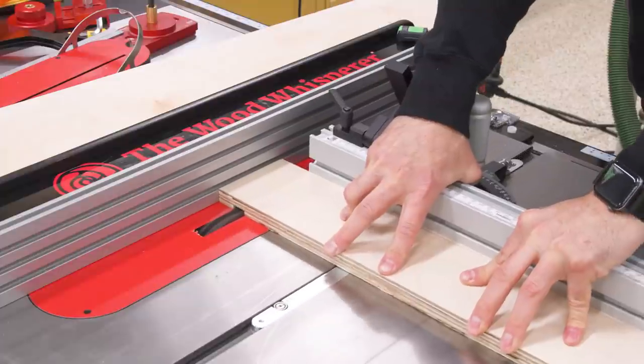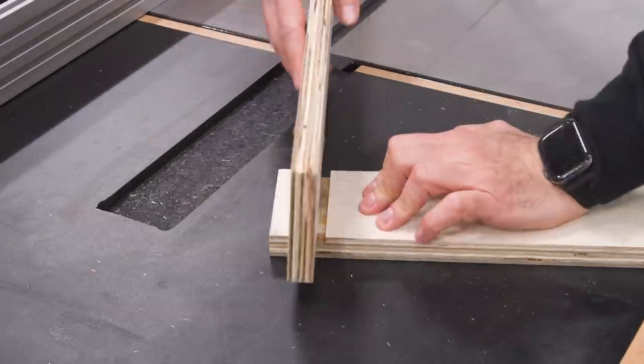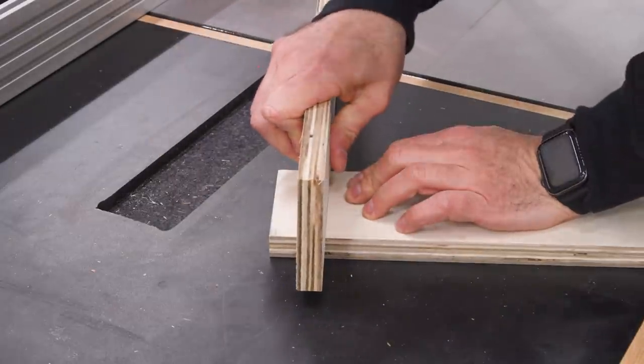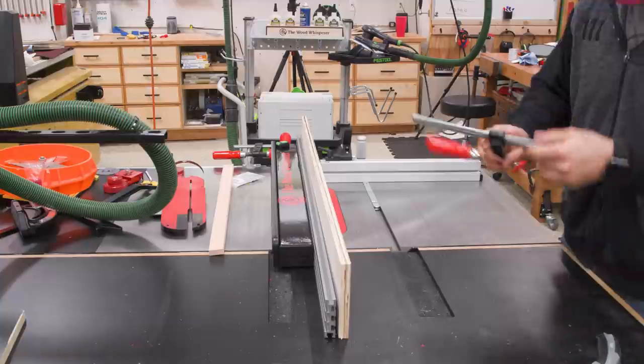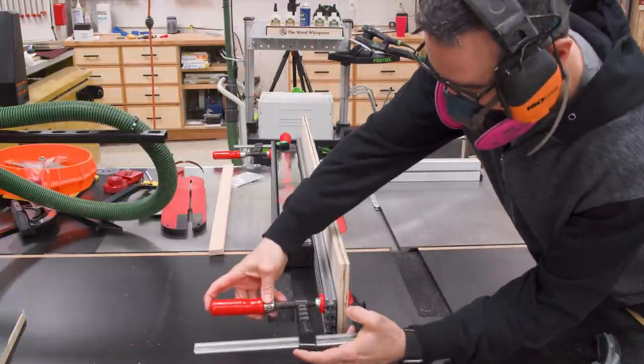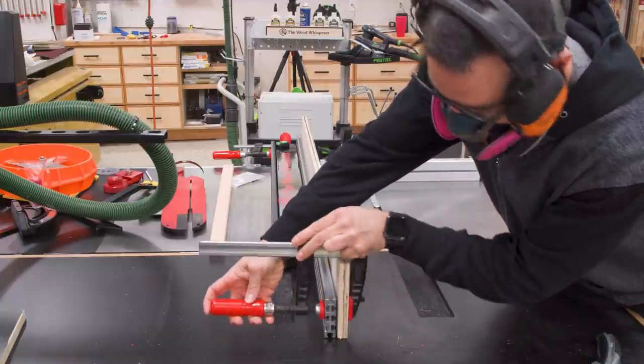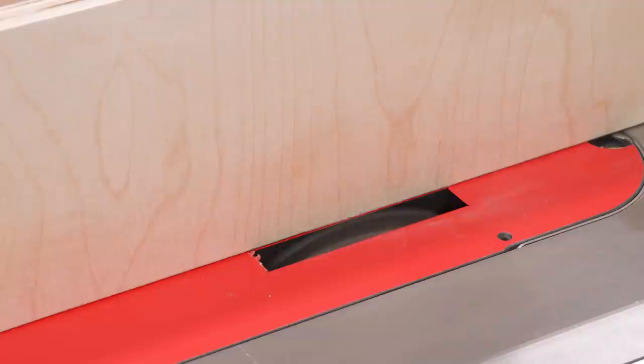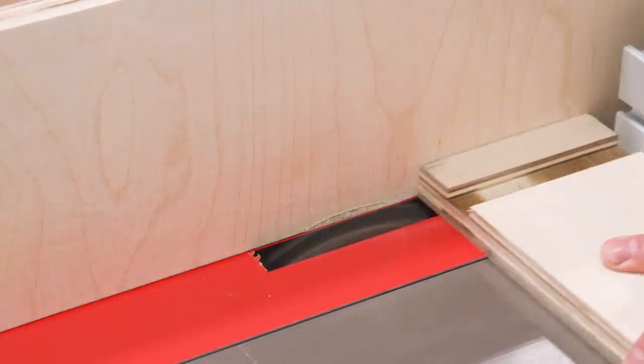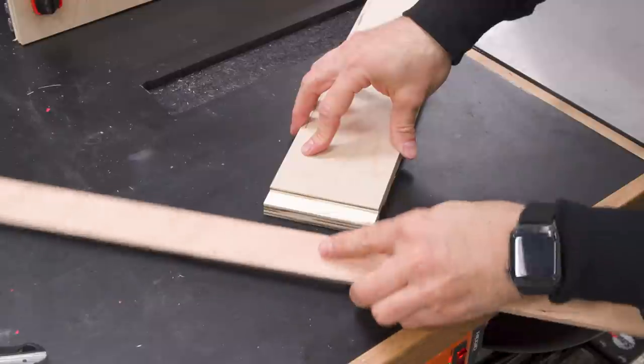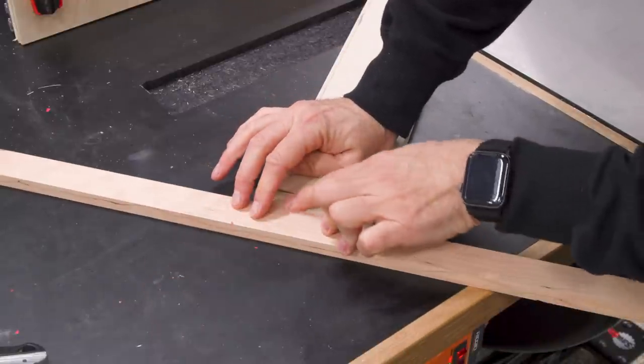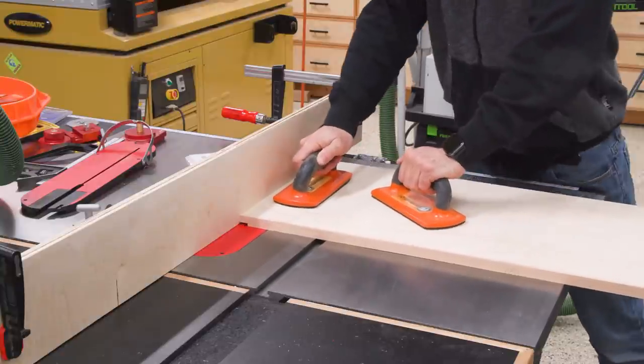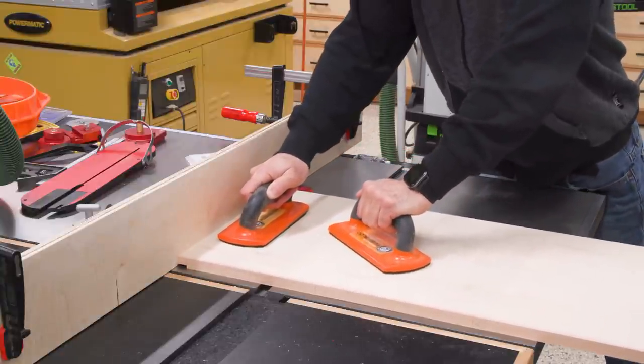At the table saw, I run a quick test to make sure that my dado stack is set to the correct width and that looks pretty good. A super tight fit here would mean that we'd have trouble when assembling later with glue. So a little movement in the joint is a good thing. For the rabbits on the ends, I'll employ a sacrificial fence. I'll then dial in the height of the blade so that it leaves me with exactly a half inch of material after the cut. This piece of scrap is planed to exactly a half inch so it makes it easy to tell if the leftover material is the right thickness. Now I'll cut the rabbits in the top and bottom of the side panels.